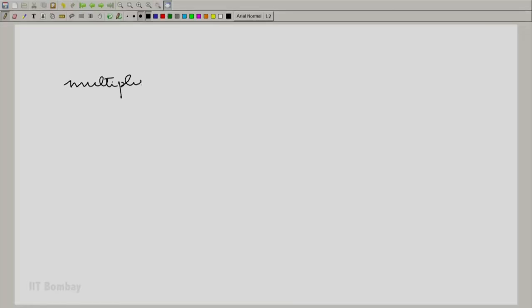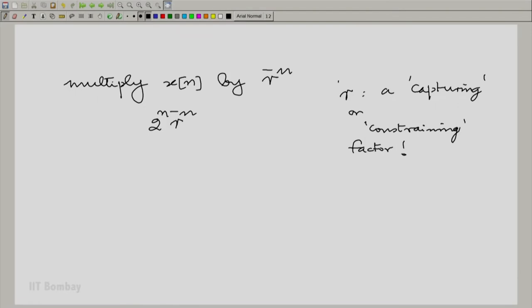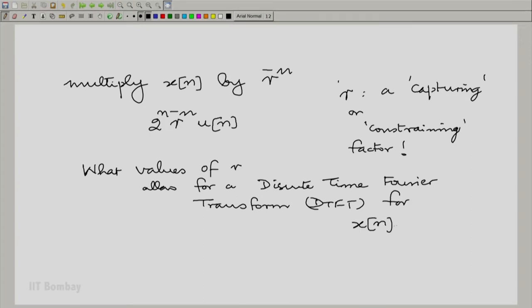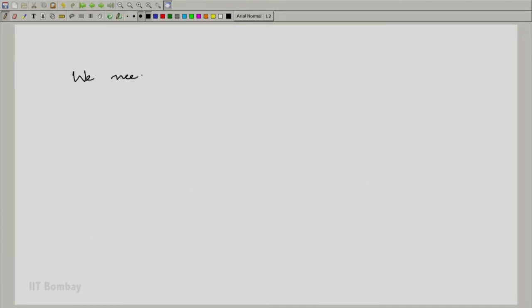We can capture its growth by using an exponential that decays faster. And when we do that, we can then identify what would happen to that captured sequence in the Fourier domain. Let us now multiply x of n by r raised to the power minus n. You have 2 raised to the power of n times r raised to the power minus n. So essentially r is a capturing factor. Now, under what conditions on r would we have a discrete time Fourier transform for this sequence? Without any loss of generality, consider r to be a positive real constant.